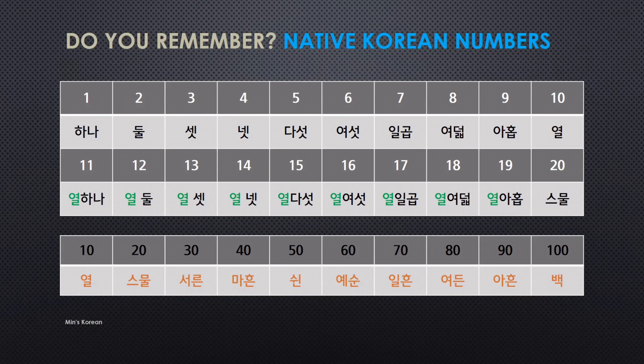Then next, Sino-Korean numbers from one: 일, 이, 삼, 사, 오, 육, 칠, 팔, 구, 십.